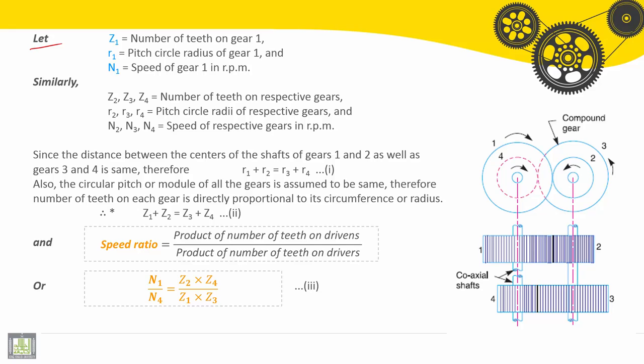Let Z₁ be the number of teeth on gear one, R₁ will be the pitch circle radius of gear one, and N₁ is the speed of gear one in RPM. Similarly for gear number two, three, and four.